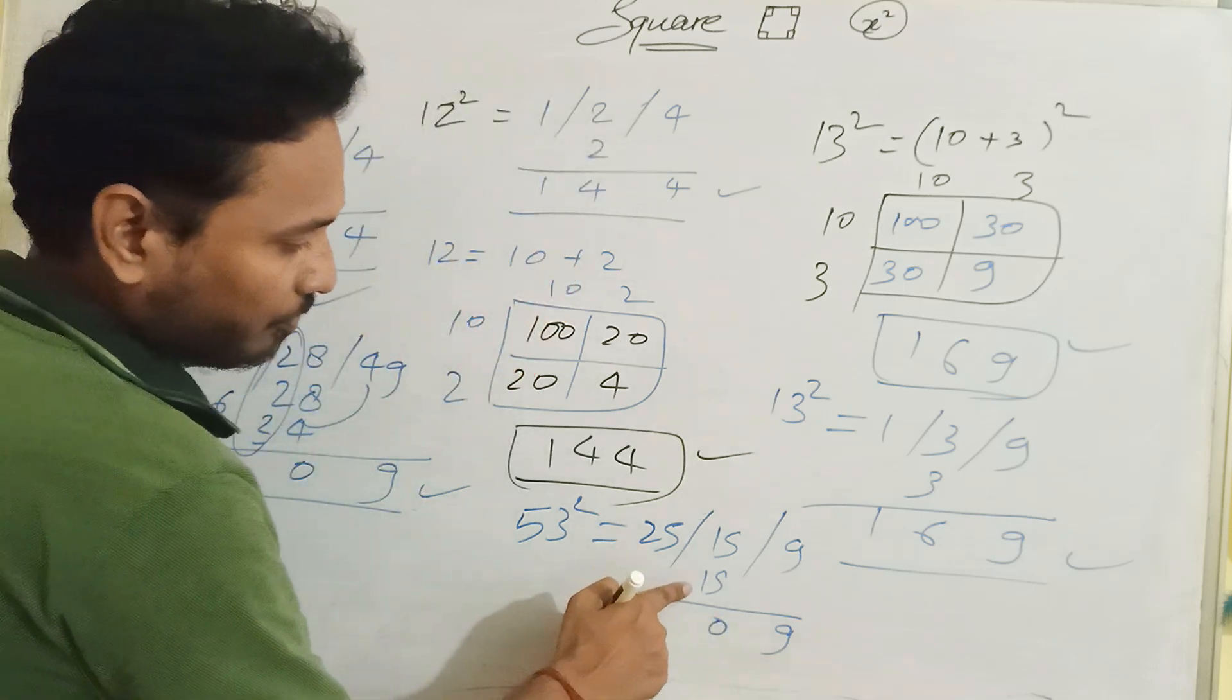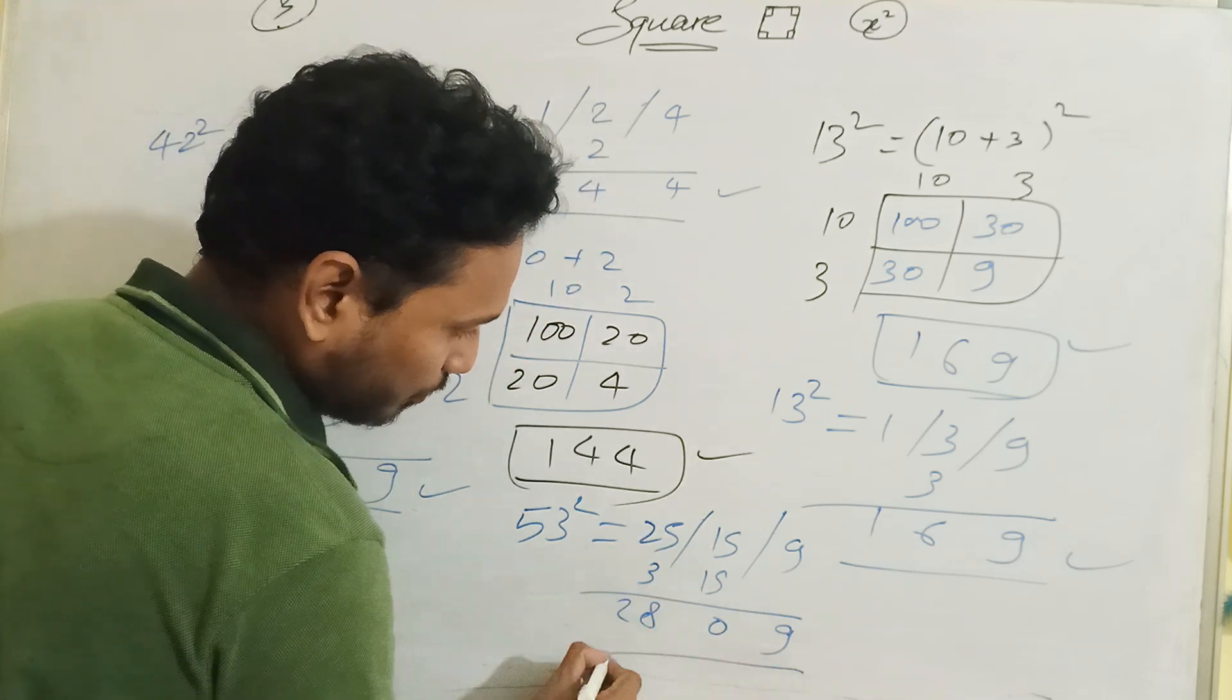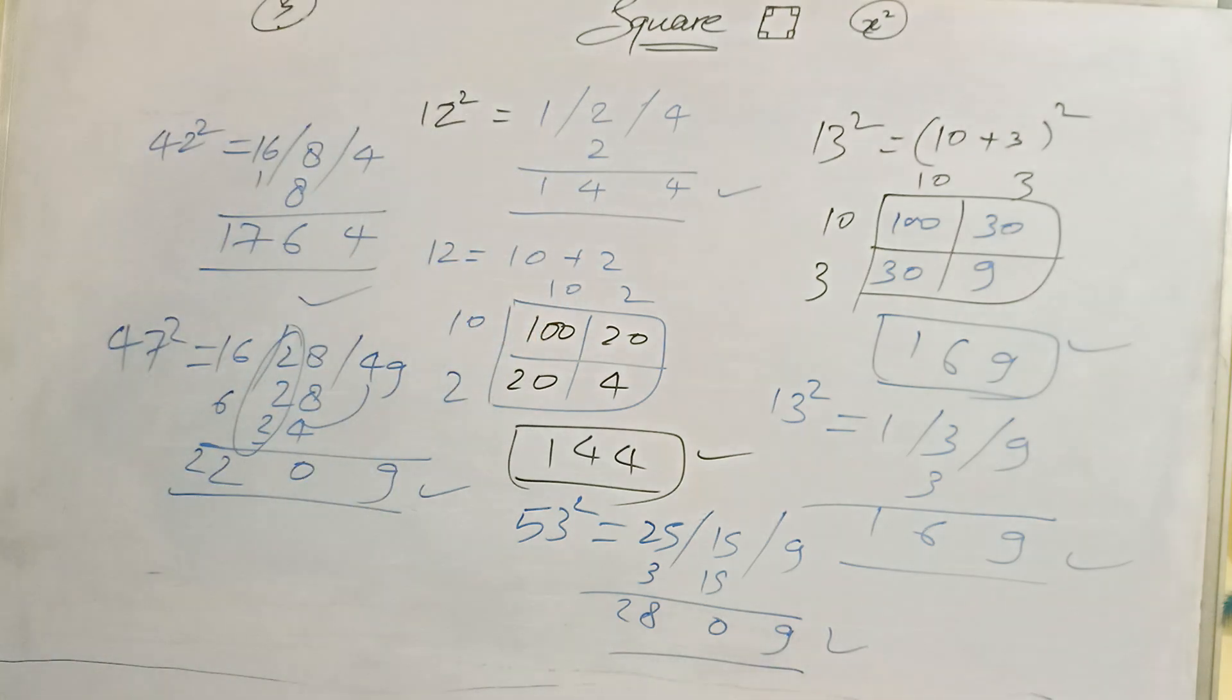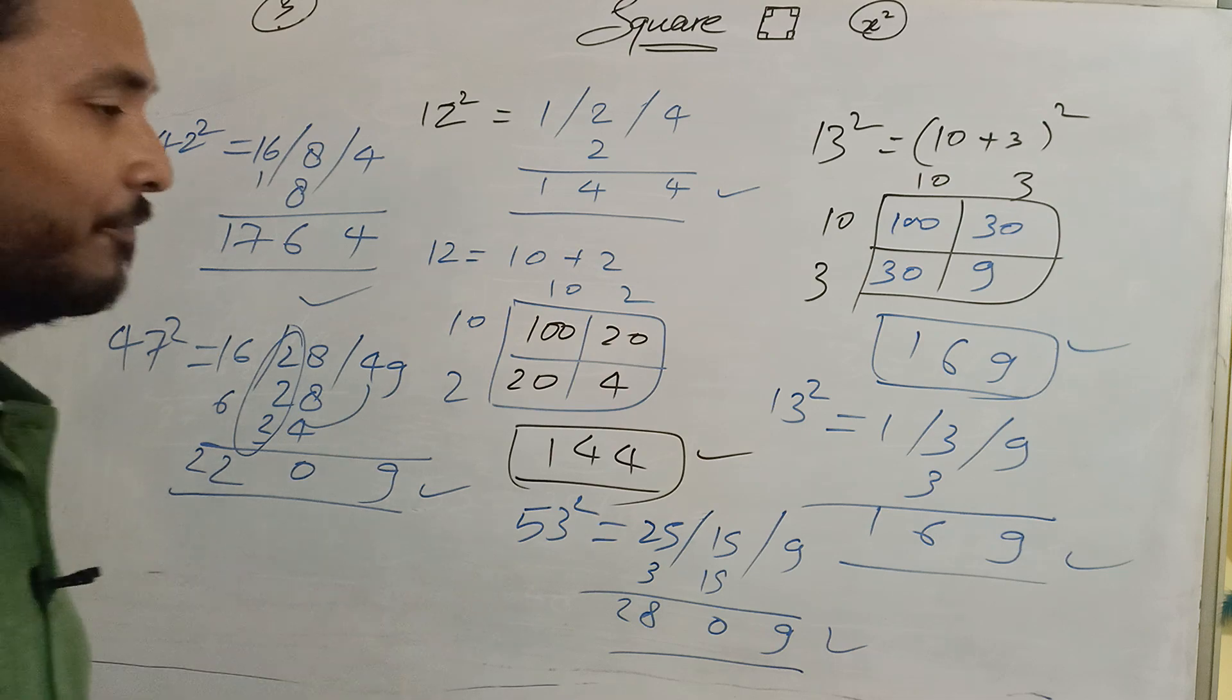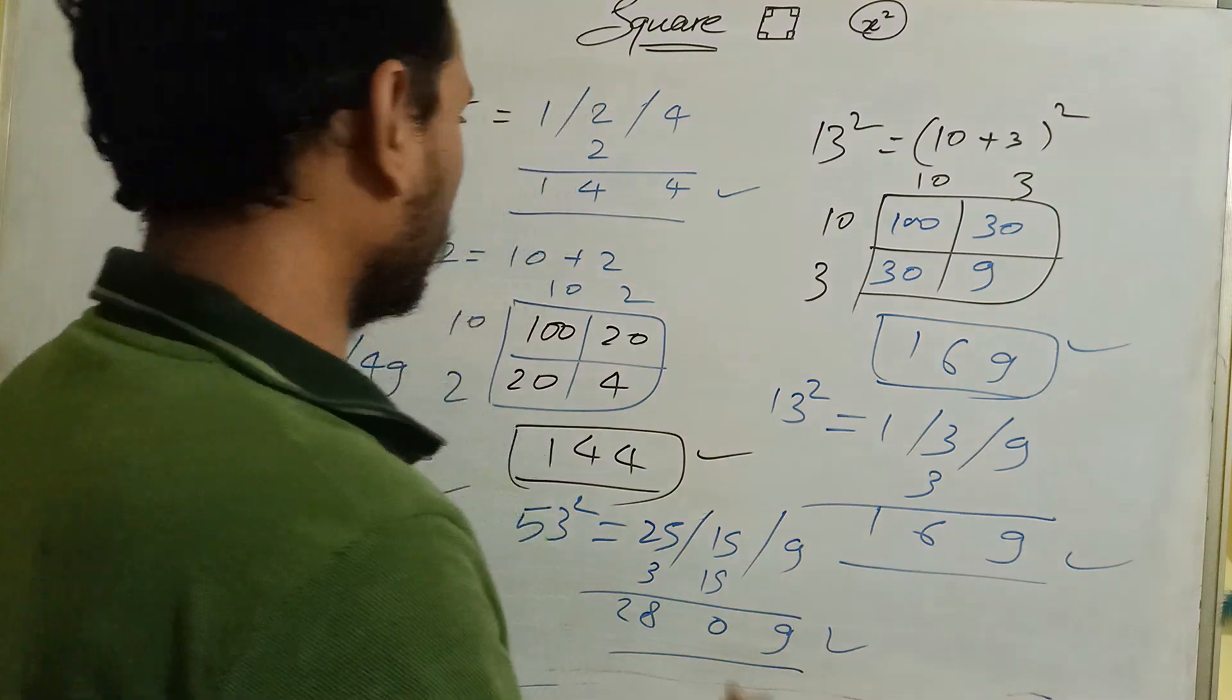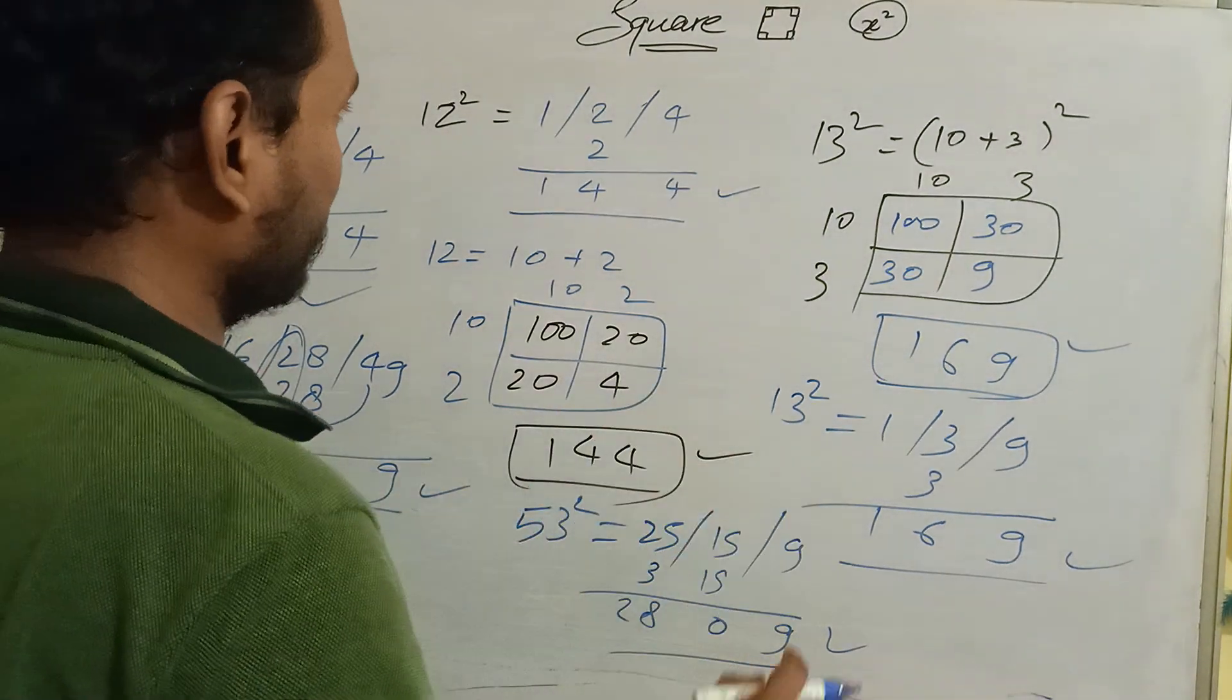5×5=25, 5×3=15, 3×3=9. 8, 9, 5, 5, 10, 0, 1, 1, 2, 1, 3, 5, 3, 8, 2, 2, 8, 0, 9. This is the square of 53. Here is more interesting method to solve - this is the game of square.